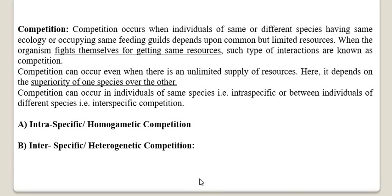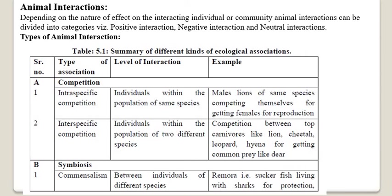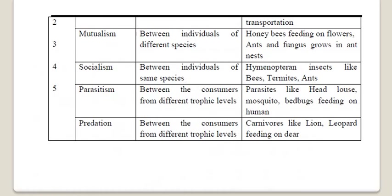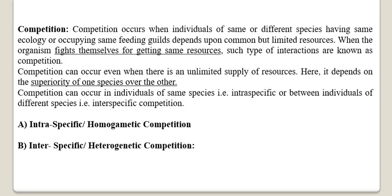In the present lecture, we have studied the concept of animal association and animal interaction — that is, association and different types of animal association like competition, symbiosis, mutualism, socialism, parasitism, etc. We also studied animal association at individual, population, and community levels, and a brief introduction to competition. In the next lecture, we will study intraspecific (homogametic) competition and interspecific (heterogametic) competition in detail.